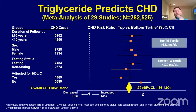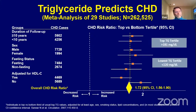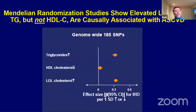Why do we care about hypertriglyceridemia? A meta-analysis of large numbers of studies shows an association between hypertriglyceridemia and cardiovascular disease — on average about a 70% increase in cardiovascular disease risk. This is an association, not necessarily cause and effect. However, Mendelian randomization studies, which use genes affecting triglyceride, LDL, or HDL levels — randomized during conception and therefore less influenced by confounding factors — help establish causality.